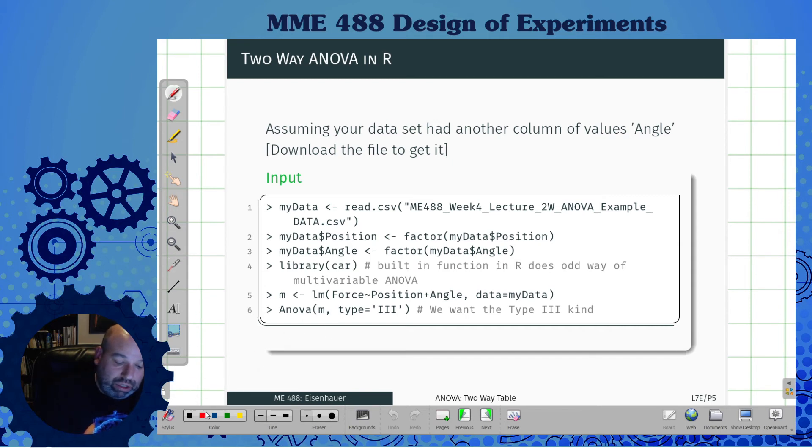And this one, I have to use the ANOVA with a capital A, and I need to also set as a type three. Why we use type three is beyond the scope of the class. Just know type three is the one you want. It basically says that I don't care what order I put them in. If you use one of the other types, it switches around.